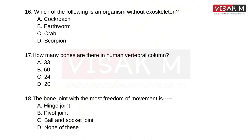Options: Option A, Cockroach. Option B, Earthworm. Option C, Crab. Option D, Scorpion. Which organism has no exoskeleton on their body?